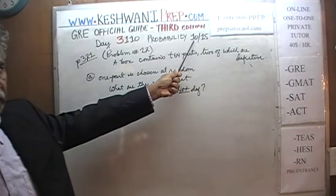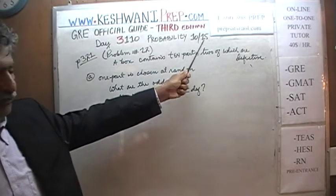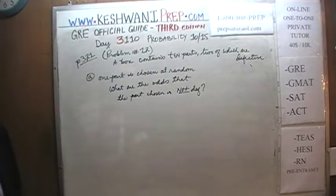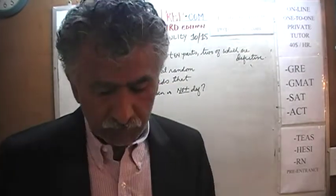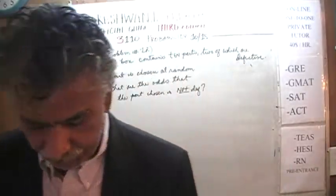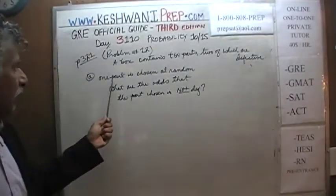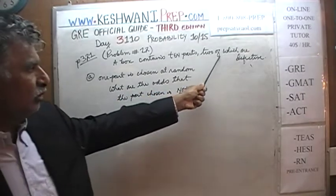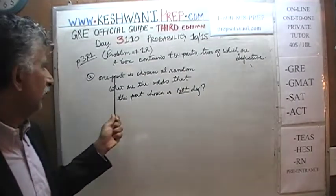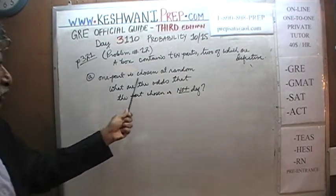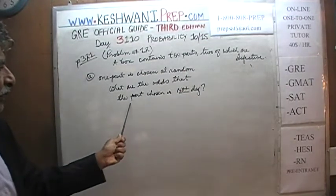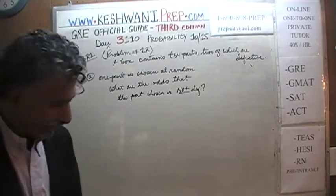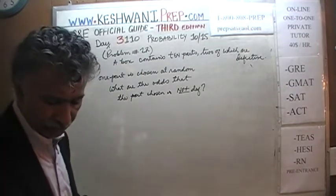Today is our tenth lesson on the topic in a series of 15. We will do problem number 12, found on page 321. Open your book and turn to page 321. It says that we have a box containing 10 parts, two of which are defective. The question is: if one part is chosen at random, what are the odds that the part chosen is not defective?